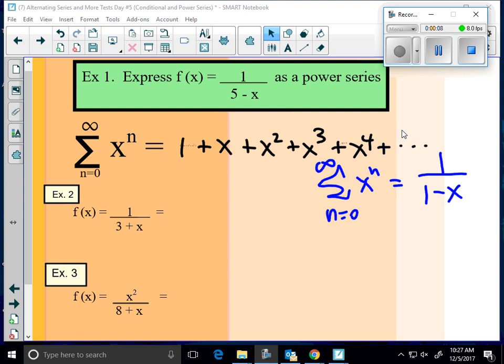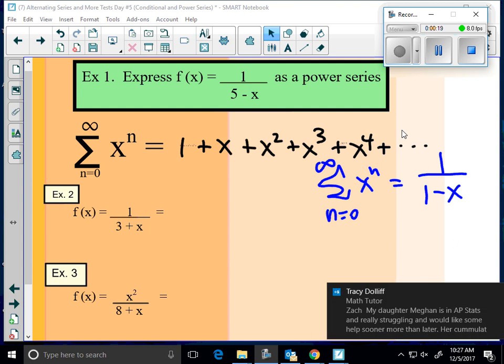Okay, so this is a continuation of day number five, going from conditional and absolute convergence to today. Now we're talking about power series, and we've shown that the sum from zero to infinity of x to the n power is equivalent to the rational function one over one minus x.